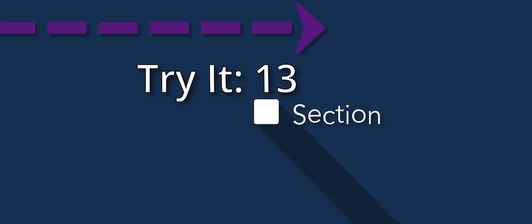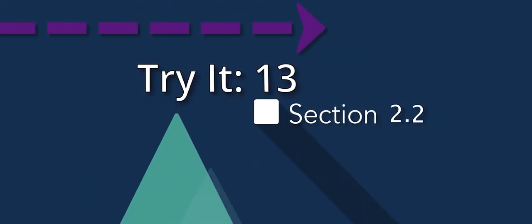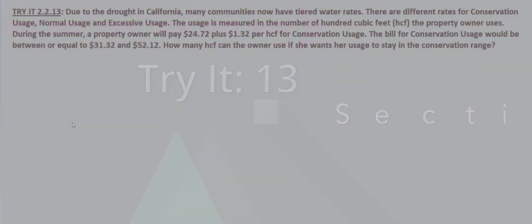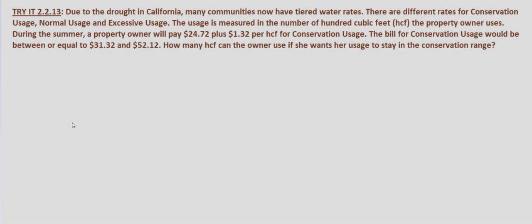Finally we're looking at applications of compound inequalities. In this problem we're told that due to the drought in California, many communities now have tiered water rates. There are different rates for conservation usage, normal usage, and excessive usage. The usage is measured in the number of 100 cubic feet, or HCF, that the property owner uses.